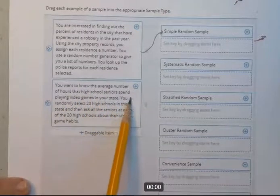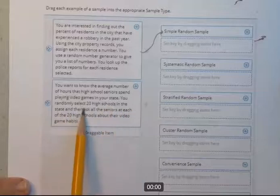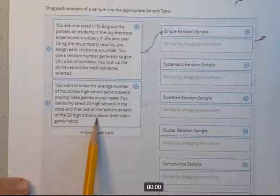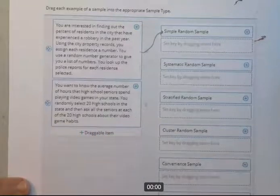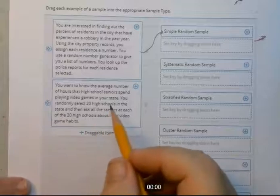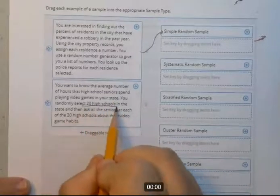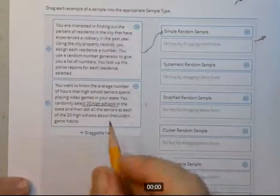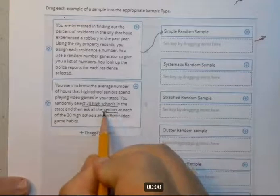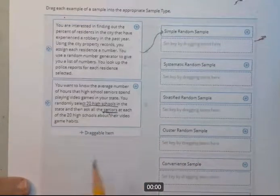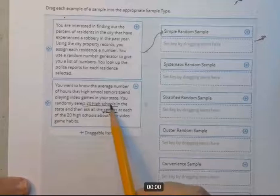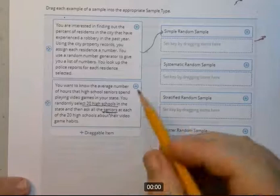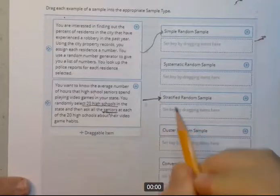You want to know the average number of hours that high school students spend playing video games. You randomly select 20 high schools in the state and then ask all the seniors at each of the 20 high schools about their video games. So you're doing two passes or two cuts here. First of all, you're selecting 20 high schools. So that's your first cut. You're not going to do all the high schools, just 20. And then once you do the 20, you're only going to choose the seniors. You're not going to choose all the students. So there's two passes or two cuts there. High schools, which high schools you choose, and then which group of students within each high school. So that would be a stratified random sample right there.